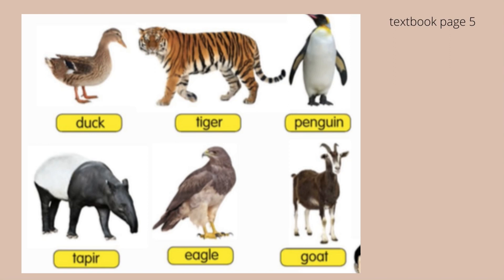Now look at the animals in this picture. We have duck, tiger, penguin, tapir, eagles, and goat. Can you classify these animals into two groups based on their characteristics?